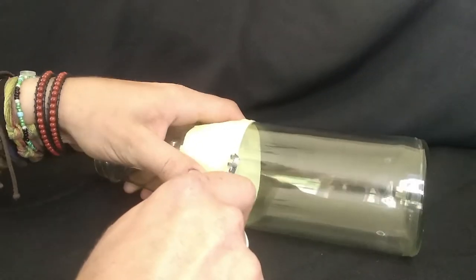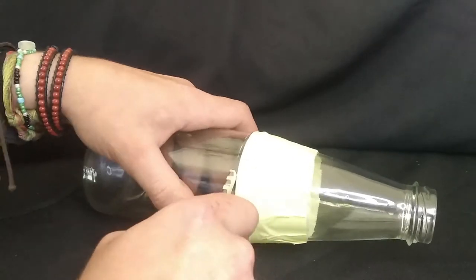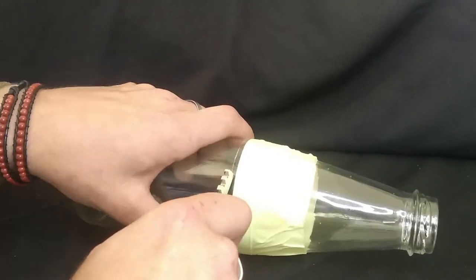For cutting the bottle we just followed the masked line trying to stay as straight as possible until we had gone completely around the bottle and we had a decent continuous score line.